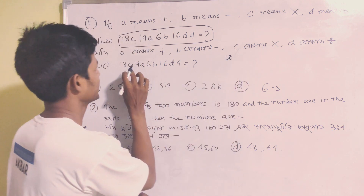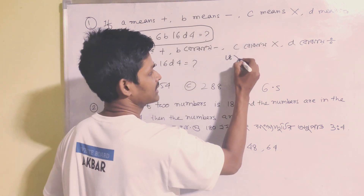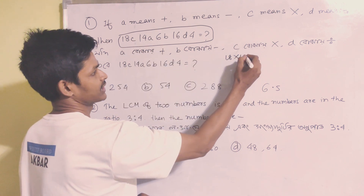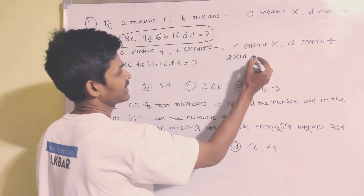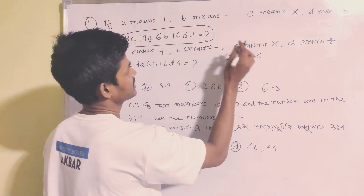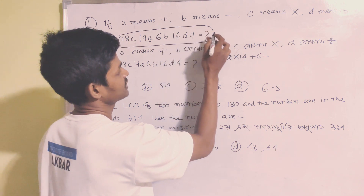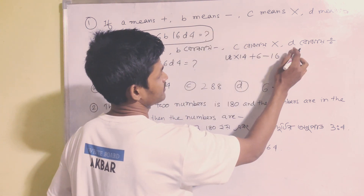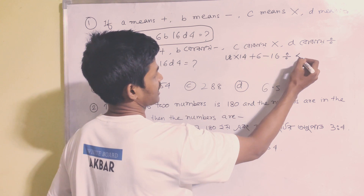In place of C we put multiply, so 18 multiply 14; next A is plus, then 6; B is minus, so minus 16; D means divide, so divide by 4.